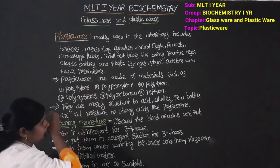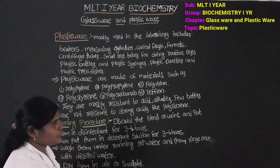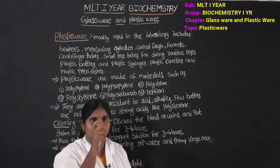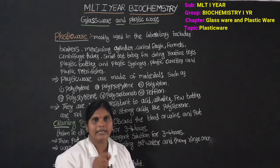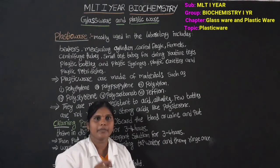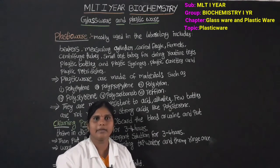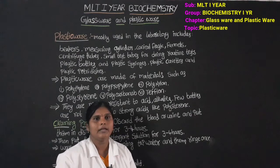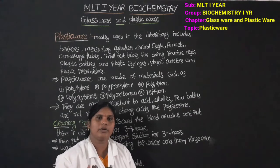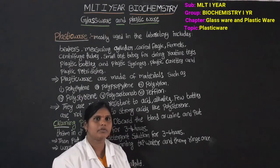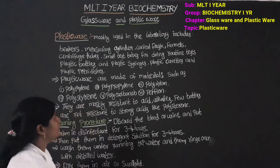Next are small test tubes and centrifuge tubes. Centrifuge tubes are tube-shaped with a conical bottom — we use centrifuge tubes for centrifugation. Small test tubes are used for routine diagnostic tests.